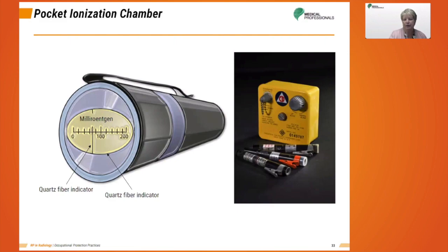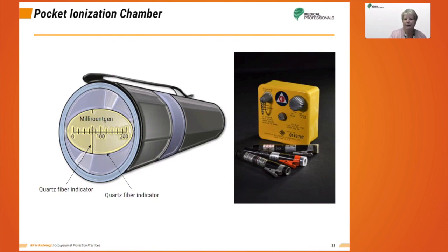The pocket ionization chamber, or PIC, is not useful in diagnostic radiography but is very beneficial when working with radionuclides. The PIC fits in a shirt or lab coat pocket, much like a pen, and measures the ionizations in air within the chamber. There are two basic types: one is self-reading, and the other requires an electrometer to read it. Both can provide readings on the spot, meaning they don't need to be sent out — which is why these are used in and around radionuclides. The PICs are fairly expensive and susceptible to drops and shock. If not read daily, they can provide inaccurate readings. Aside from daily readings, the primary advantage is that the PIC is the most sensitive of all dosimeters, but they are not effective in diagnostic radiography.